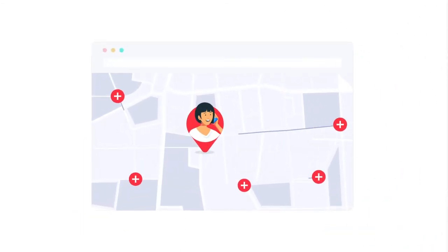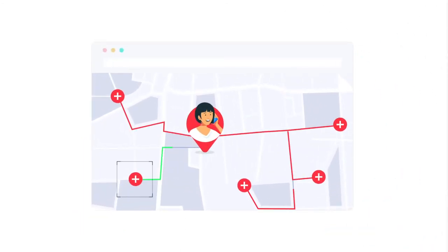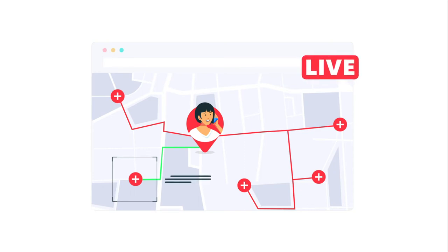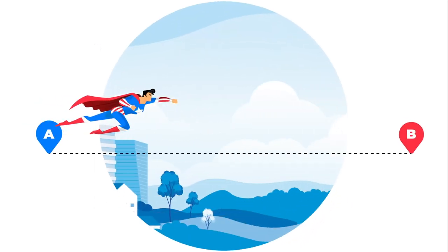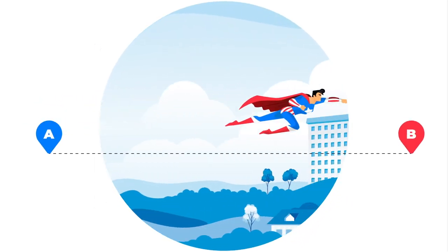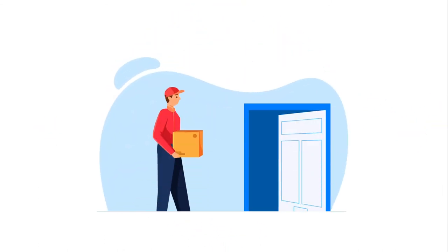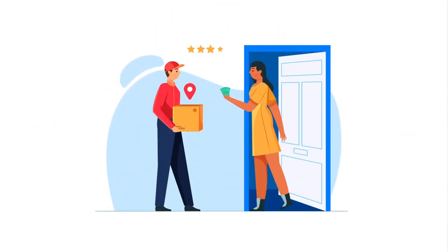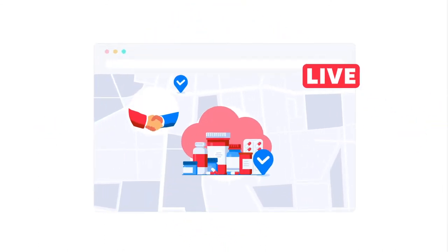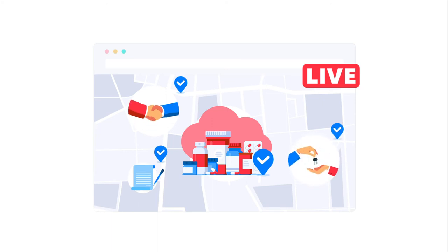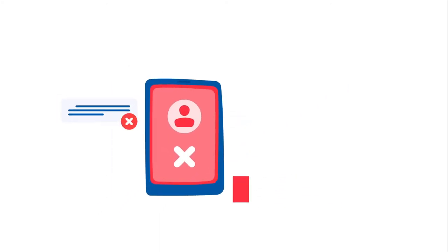iAgent's algorithm analyzes the closest eligible sales agent on the road to the nearest client in real time. Once detected, the sales agent swoops in to save the day, instantly eliminating missed opportunities to connect you with your customers whenever and wherever they are.